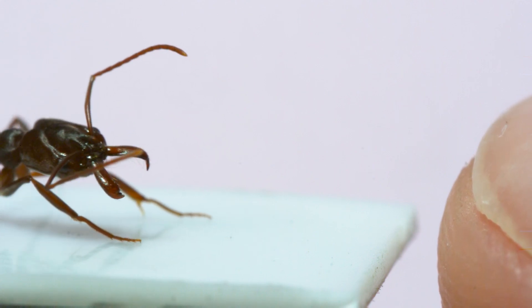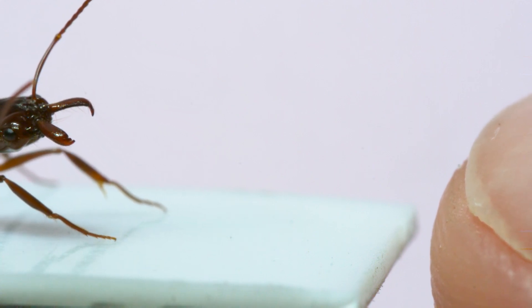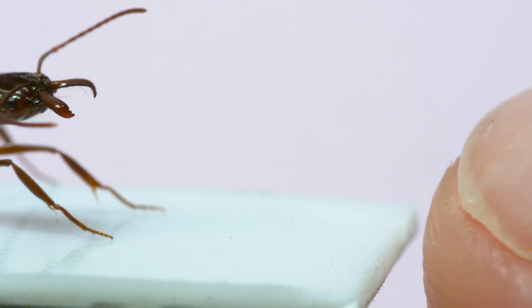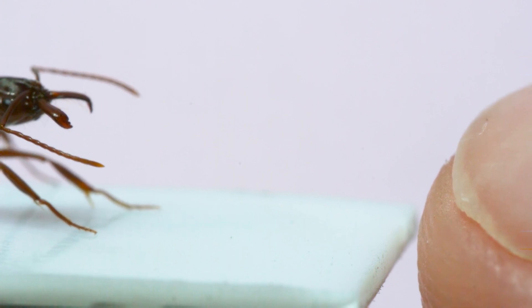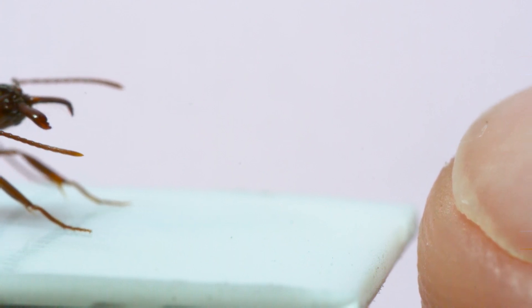So you can see the mandible strike doesn't do anything to my fingertip. I can feel it, but just barely. But a snap does generate enough force to send the ant flying back away from my finger.